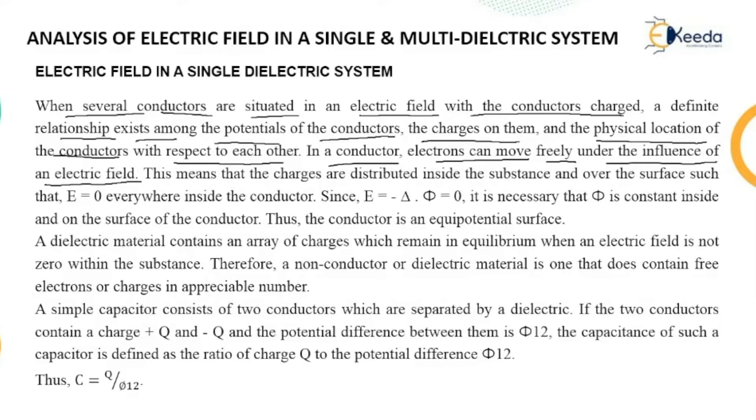In a conductor, electrons can move freely under the influence of an electric field. This means that the charges are distributed inside the substance and over the surface such that E = 0 everywhere inside the conductor. Since E = -∇φ = 0, it is necessary that φ is constant inside and on the surface of the conductor.